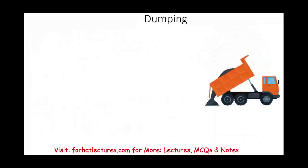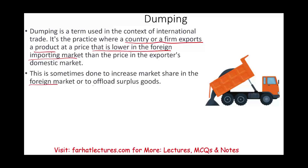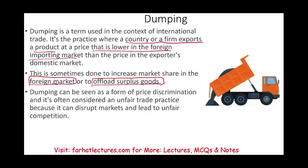Dumping is a term used in international trade. It's a practice where a country or firm exports a product at a price lower than the price in the foreign importing market — lower than what the exporter charges domestically. For example, a Japanese company exports a product to the US and sells it for less than what US producers charge. Everyone will buy the Japanese product. This is done to increase market share in the foreign market or to offload surplus goods. A company might do this to gain a foothold and market share, or because they have a surplus — when you have too much supply, you reduce your price. Dumping is considered a form of price discrimination and an unfair trade practice because it disrupts markets and leads to unfair competition.